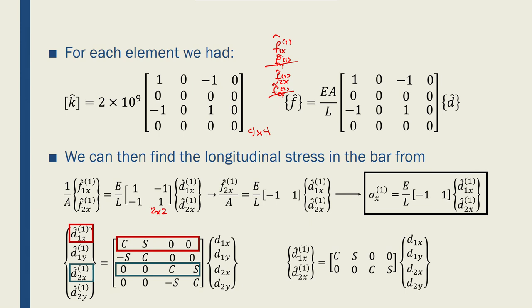A truss element must also be in equilibrium. So f1x plus f2x should be equal to 0. And as a result, we can just pick one of the nodal forces like f2x at node 1 and divide it by the A that we have. It would be E over L times [minus 1, 1], d1x, d2x.